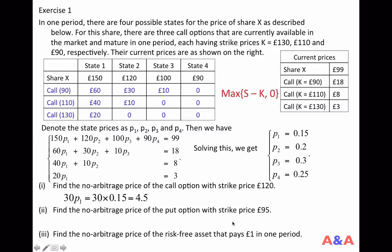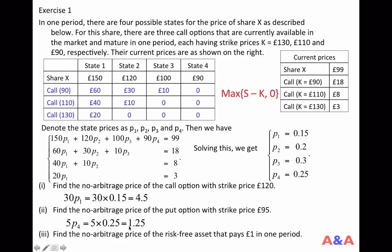For the put option with strike price 95 pounds: a put option is the right to sell. If the share price is high, the put option is worthless. Only in state 4, where the share price is 90 pounds, is this option valuable — worth 95 minus 90 = 5 pounds. So this put option is a bundle of 5 units of state 4 contingent claims, giving a theoretical value of 5 × P4 = 5 × 0.25 = 1.25 pounds.